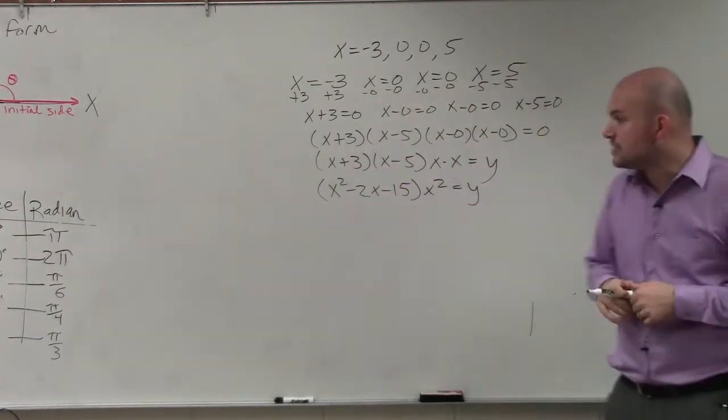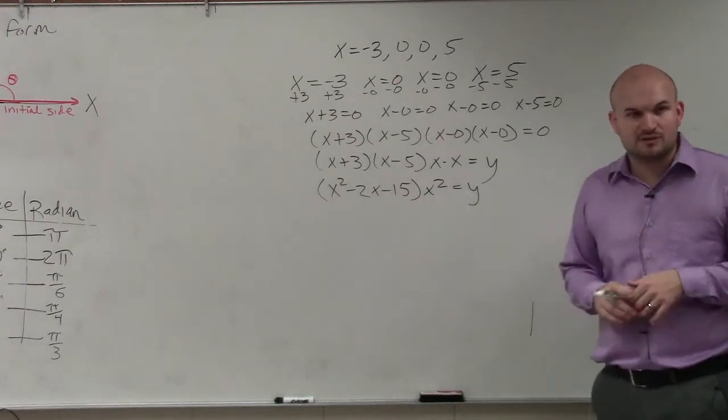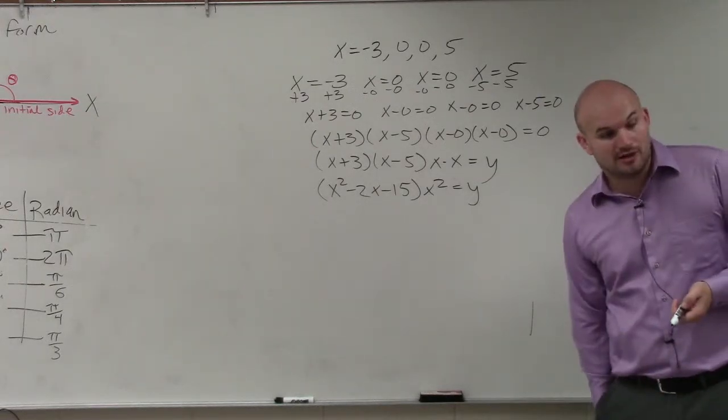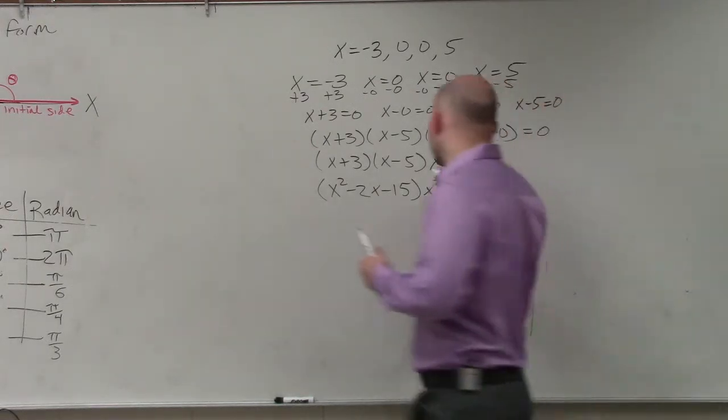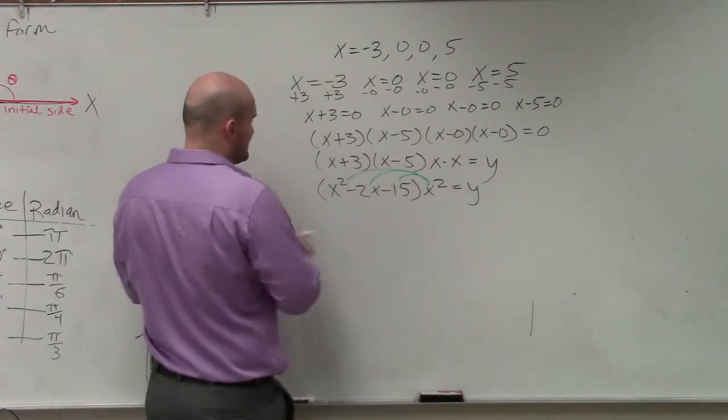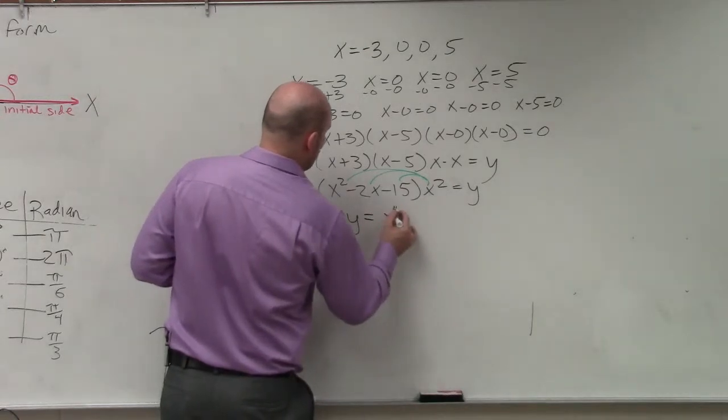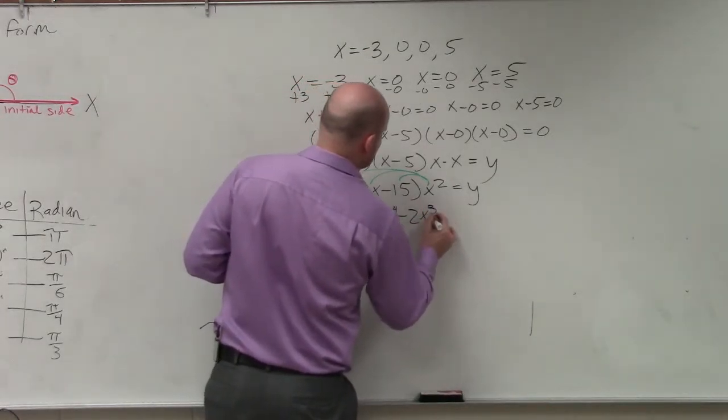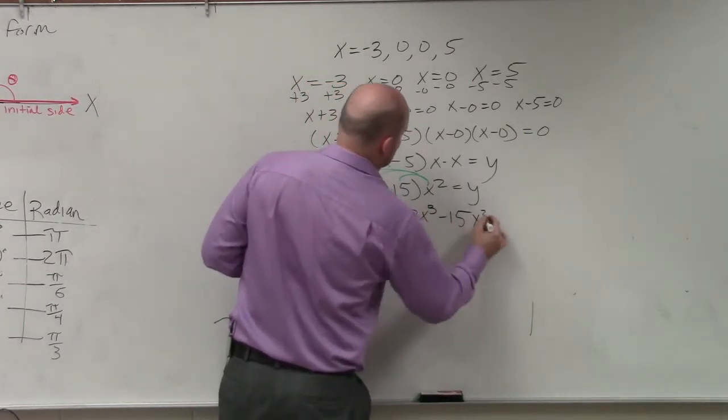So now, I have my trinomial multiplied out times x squared. How do you multiply your trinomial times x squared? You need to apply the distributive property. Therefore, my final answer is the equation y equals x to the fourth minus 2x cubed minus 15x squared.